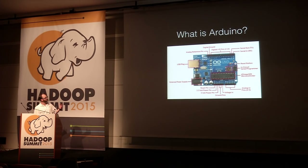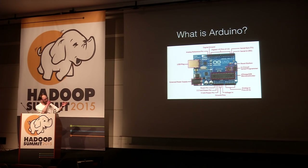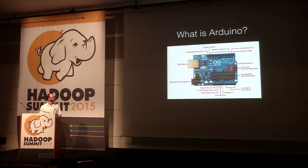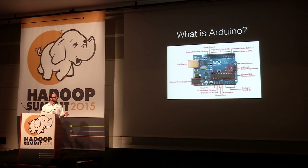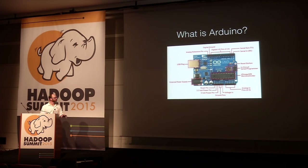The Arduino has digital inputs and outputs, and analog inputs and outputs. Those pins let you connect to multiple sensors and outputs such as lights, LEDs, and LCD displays. When comparing Arduino to Raspberry Pi, keep in mind the existence of both 3-volt and 5-volt output sensors. Different sensors use different voltages, and Arduino lets you use either, which helps a lot.